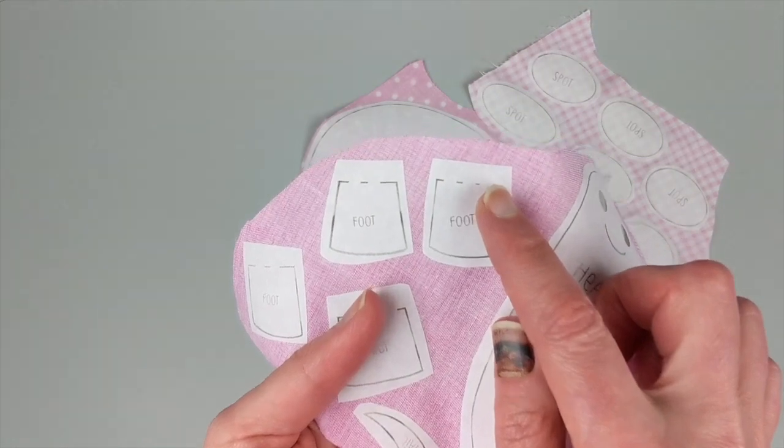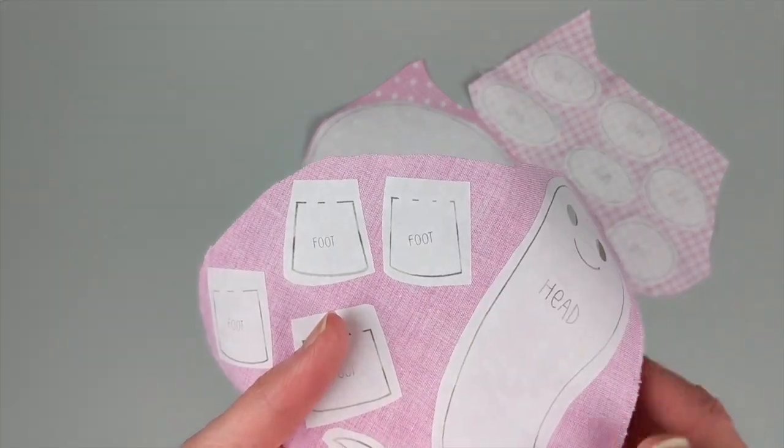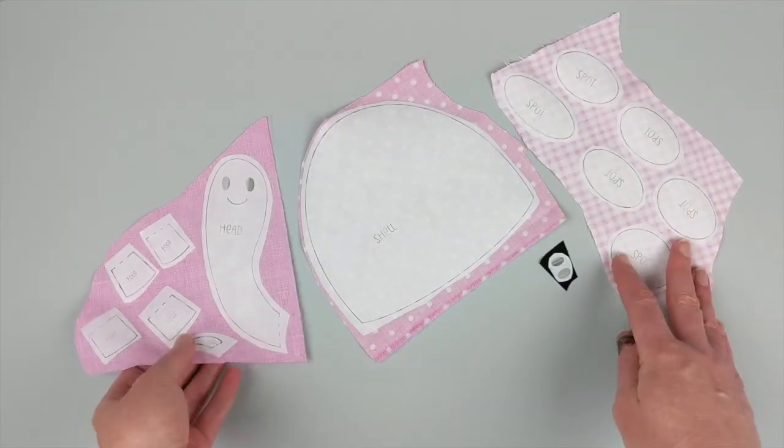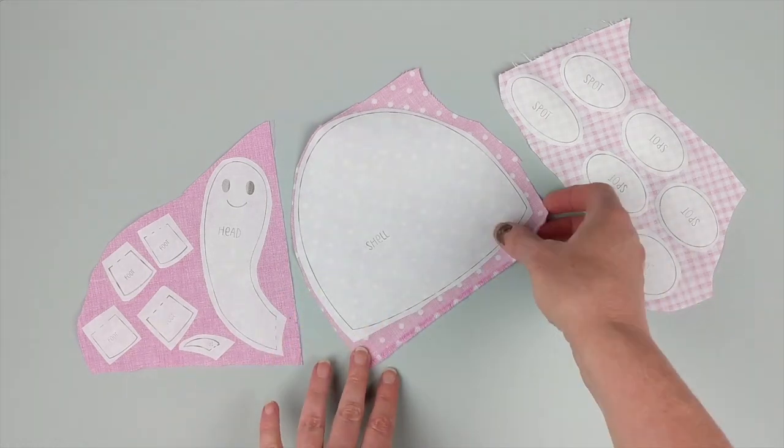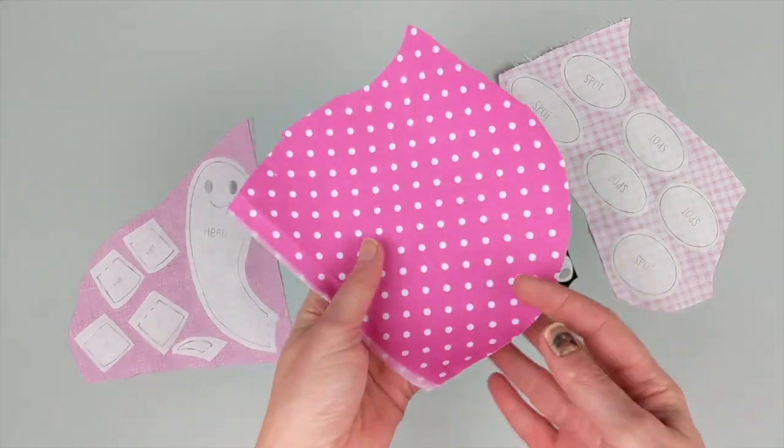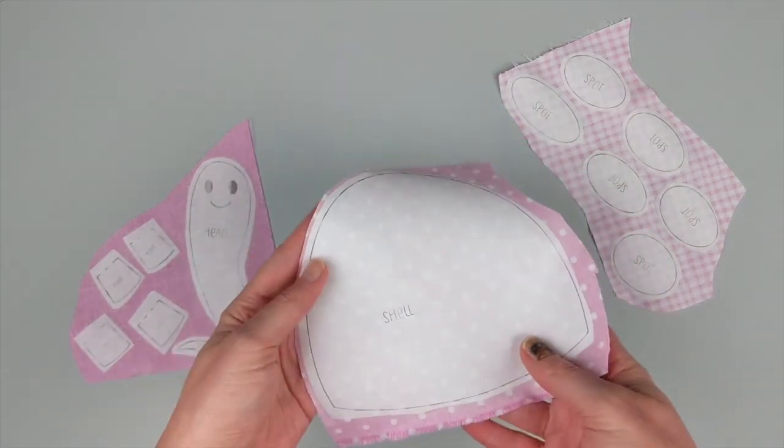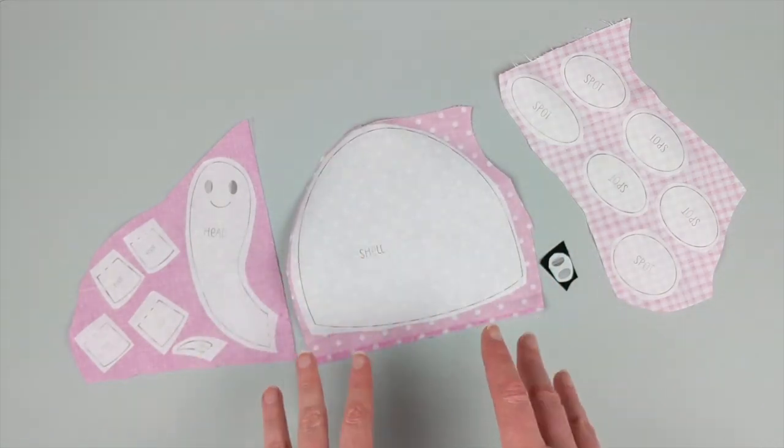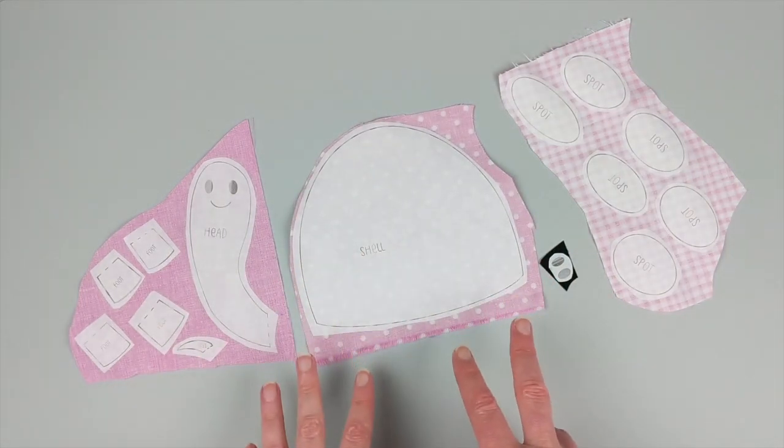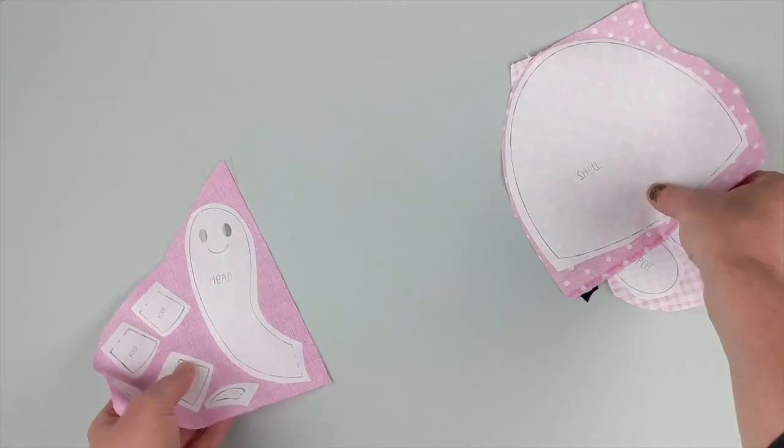By rough cut, I mean cut a little bit extra around all the edges, and you want to leave a little extra anywhere that there is a dotted line. You're going to fuse all of those pieces to the back side of your fabric, and then we're going to cut them out again.